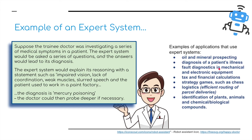So where else might an expert system be used? Oil and mineral prospecting — trying to find these deposits. Diagnosis of a patient's illness. Fault diagnostics in mechanical and electronic equipment. Tax and financial calculations. Strategy games such as chess. Logistics — efficient routing of parcel deliveries, for example. Identification of plants, animals, and chemical biological compounds. You may have seen apps on your mobile phone where you can point your camera at leaves on a tree or specific plants, and it will recognize them based on this kind of expert system.